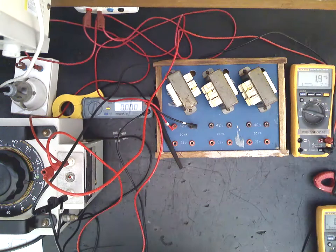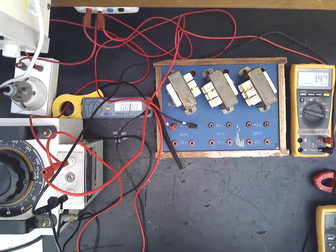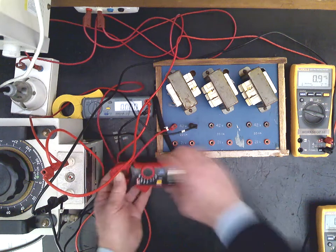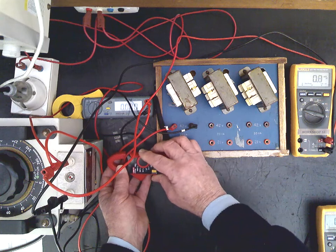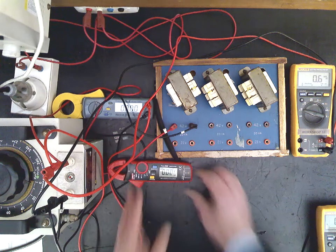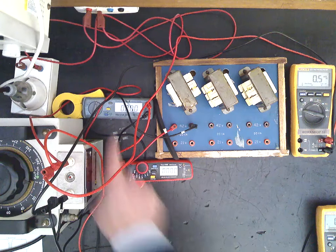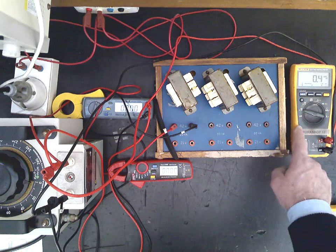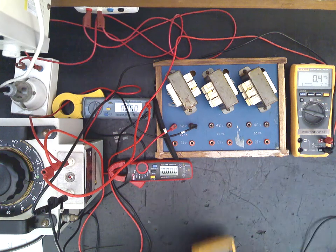And an ammeter. So measuring current in the primary of the transformer. There we've got a little clip-on tong tester that's going to measure our primary current. So primary watts, primary current, and primary voltage we're seeing in that little setup there.